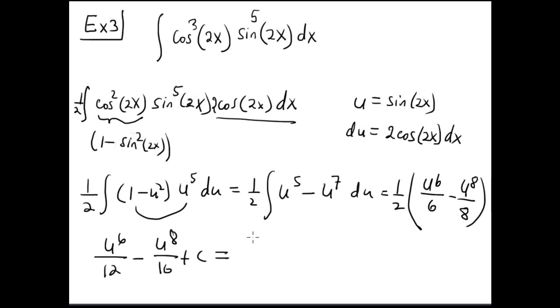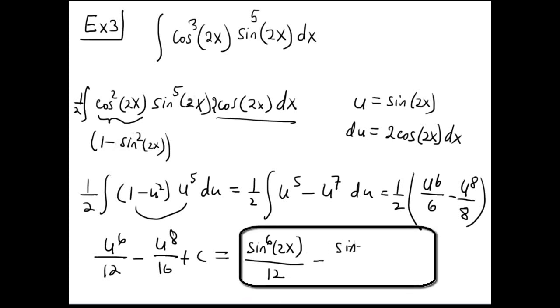minus u to the 8th power over 16 plus c. Always present using the original variable, sine to the 6th power 2x divided by 12 minus sine to the 8th power 2x divided by 16.